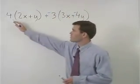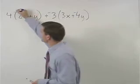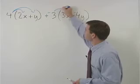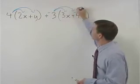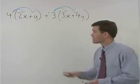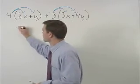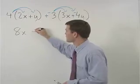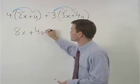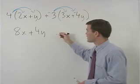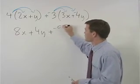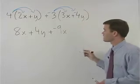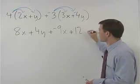Now we can distribute the 4 through the first set of parentheses and the negative 3 through the second set of parentheses. That gives us 4 times 2x or 8x plus 4 times y or 4y plus negative 3 times 3x which is plus negative 9x plus negative 3 times negative 4y which is plus 12y.